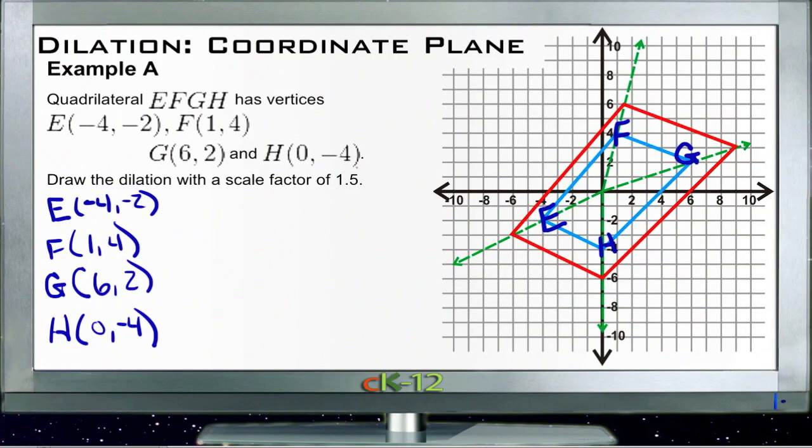All right, coordinate plane dilation Example A shows us a figure outlined here in blue. Quadrilateral EFGH looks sort of rectangular; it's just twisted. So it's right here in blue, and I'll kind of go over it real quick with orange too so you can make sure we're looking at the right thing.